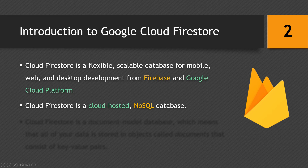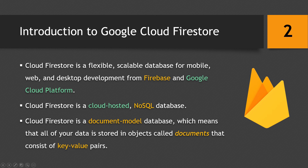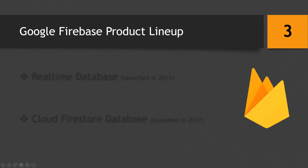What NoSQL database means is it's not like the SQL database with the tables and the relations between the tables — it's simple data involving no tables or relations. Cloud Firestore is a document model database, which means you will store documents and the documents will consist of key-value pairs. We will take a deep dive into this document and key-value pair in a moment.